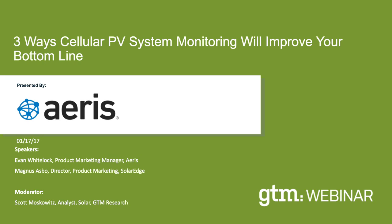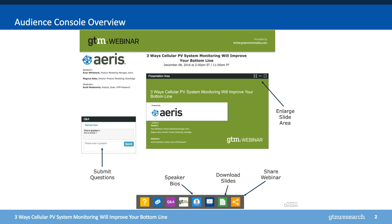Before we start, just a little bit of housekeeping. On the screen in front of you, you'll notice a menu bar along the bottom with several widgets. Popping up now is a simulation of that screen so you can see the annotations of what these links do. The Download Slides widget has a link to download a PDF of this presentation. Check out the Resource Center as well. There's also a widget to share this webinar through social media outlets such as LinkedIn, Twitter, or Snapchat. On the right side of the menu bar, you can find speaker bios.